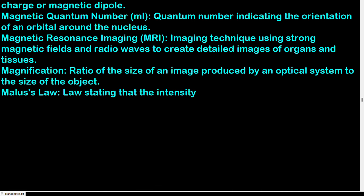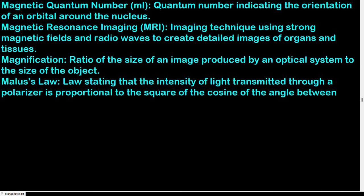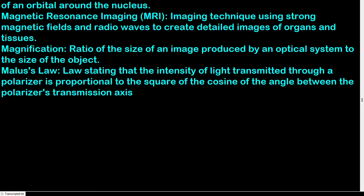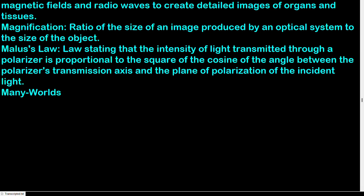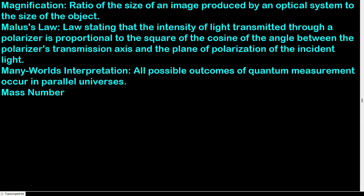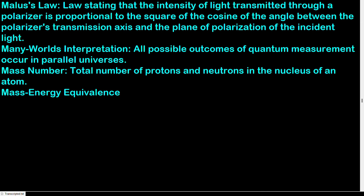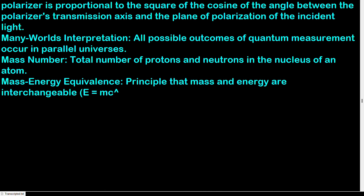Malus's law: the intensity of light transmitted through a polarizer is proportional to the square of the cosine of the angle between the polarizer's transmission axis and the plane of polarization of the incident light. Many-worlds interpretation: all possible outcomes of a quantum measurement occur in parallel universes. Mass number: total number of protons and neutrons in the nucleus of an atom. Mass-energy equivalence: mass and energy are interchangeable; E = mc².